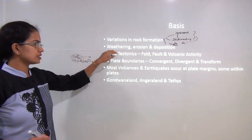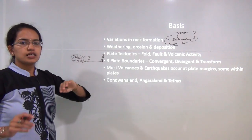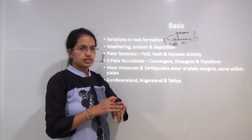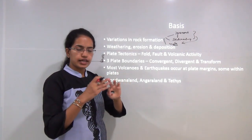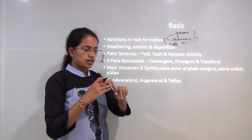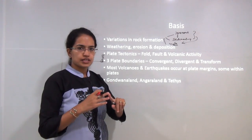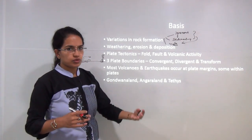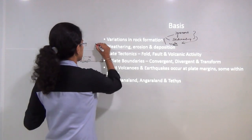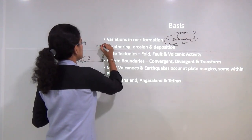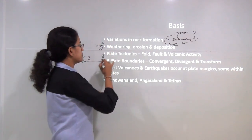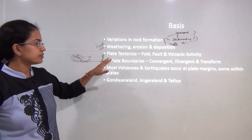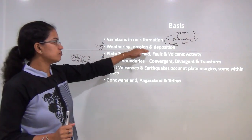All three processes occur in glacial regions, arid areas, areas where there is water action, and where there is underground water — that is the karst topography that we know about. So all these landforms are affected by these three basic phenomena.